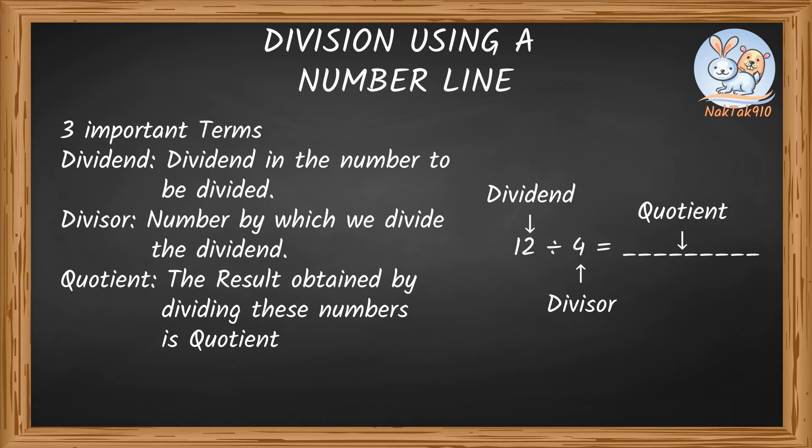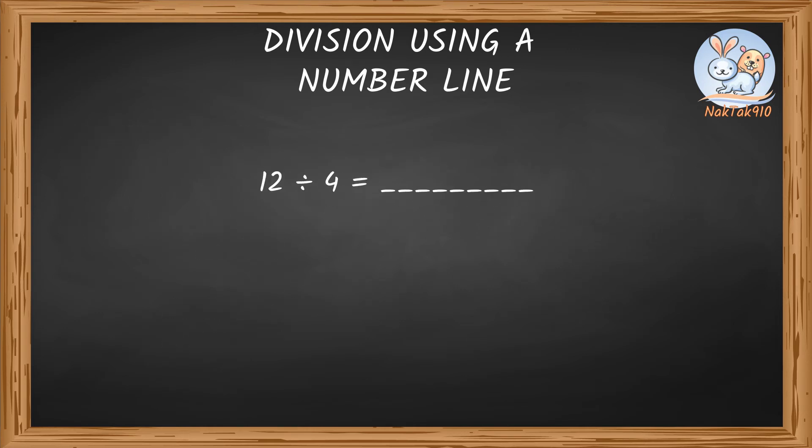I know we learnt using multiplication table and repetitive subtraction methods. Now, let's divide 12 divided by 4 using a number line to find the quotient.